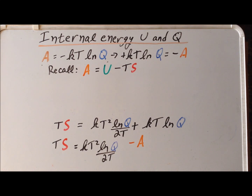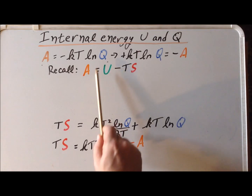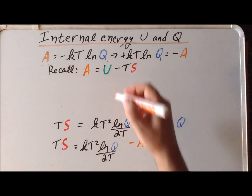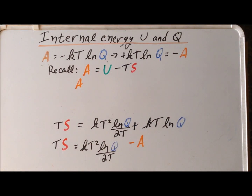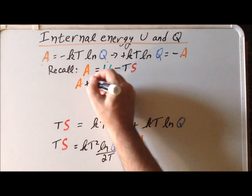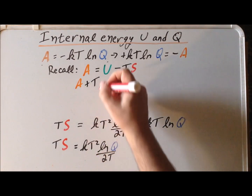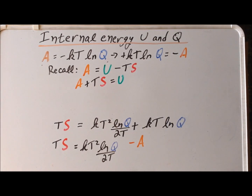Next, we recall by definition that the Helmholtz energy A is equal to the internal energy U minus the temperature times the entropy. So by a mild rearrangement of this equation, adding TS to each side, we get that A plus TS is equal to the internal energy U.